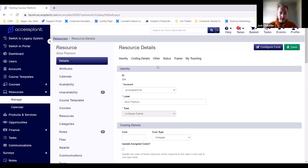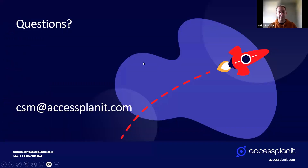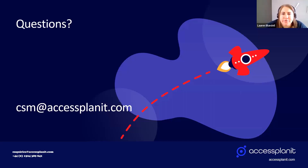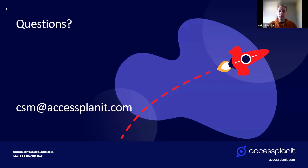That's a quick whistle-stop tour of resources — it's a really broad topic with lots more to explore in terms of customisation. One question from Claire: is it possible to have a single trainer or venue linked to multiple training providers? Yes — for a trainer, you'd need to set it up across each platform per training provider, but it can link to the one user account. So Lauren would need to be set up as a trainer in providers A, B, and C, but she'd only need one account in the platform. The same applies for venues.